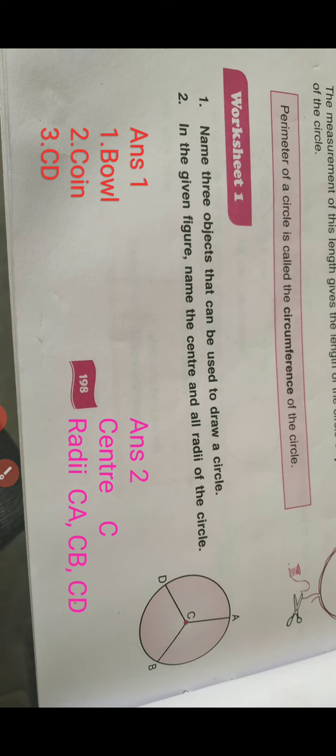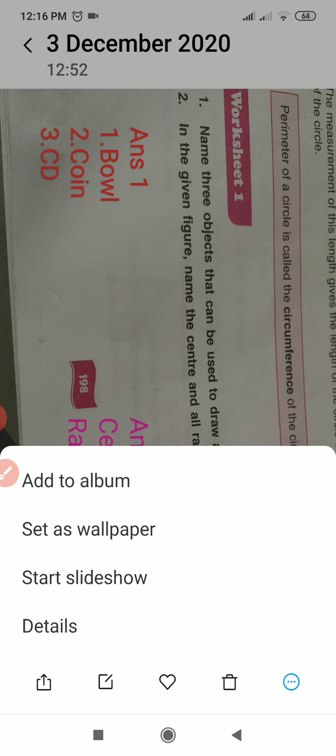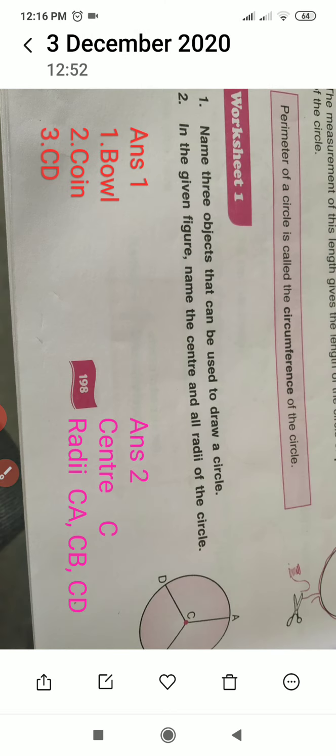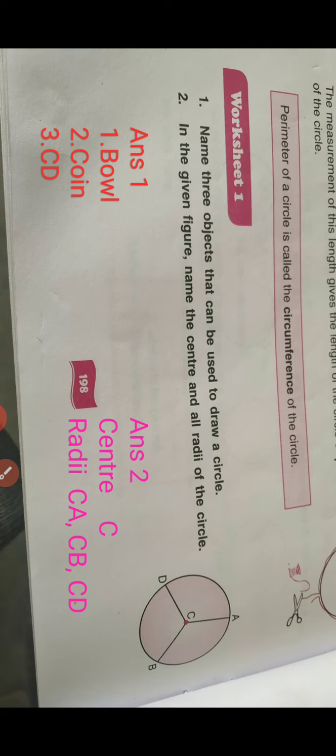So, CA, CB, CD. This is what we call radius. So, we have radius. Radius is written as radii. When there is more than one radius, we call it radii. What do we call it? Radii.